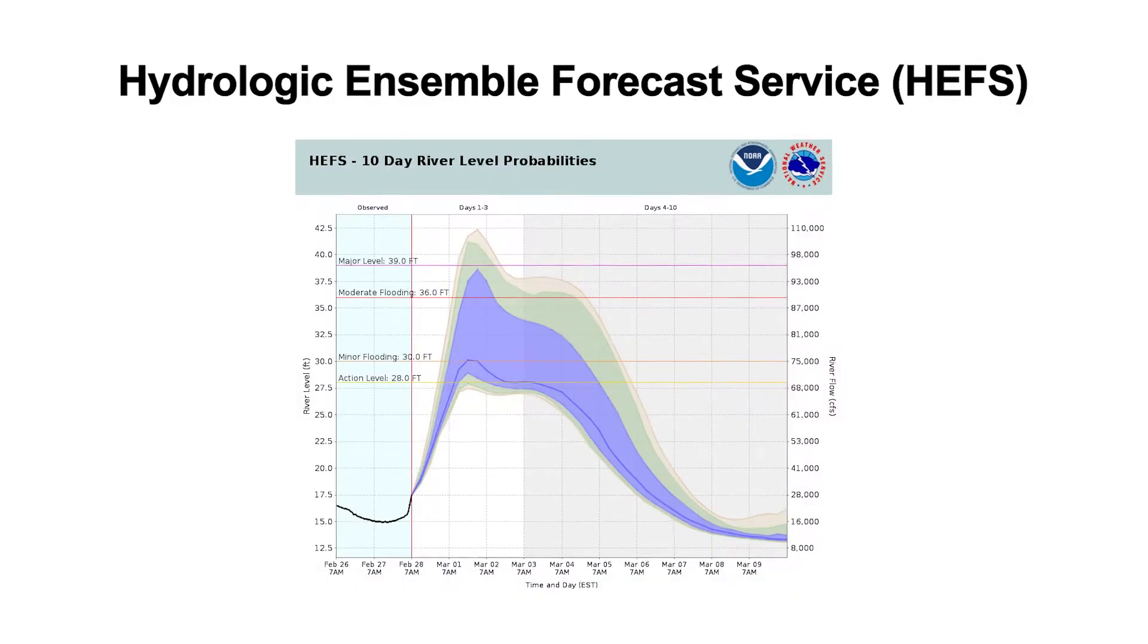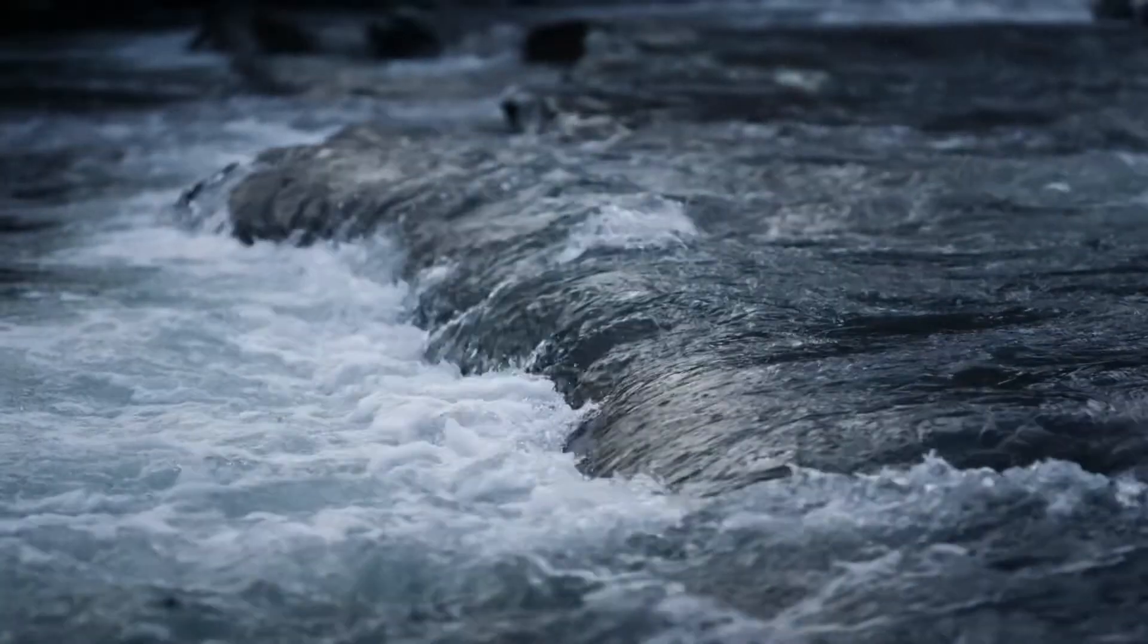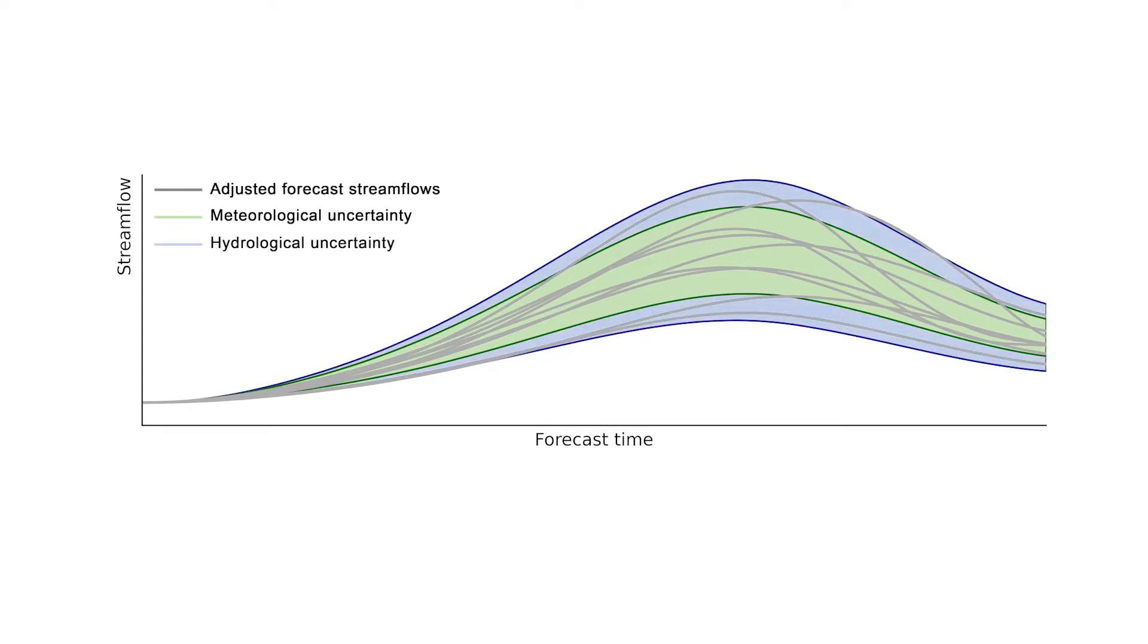The Hydrologic Ensemble Forecast Service, or HEFS, combines meteorological and hydrological components to build an ensemble of forecast streamflows that account for uncertainty in the meteorology and hydrology.